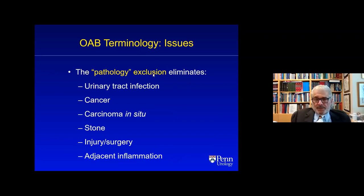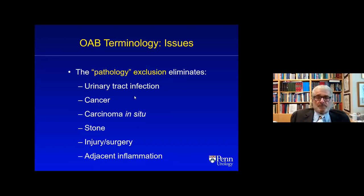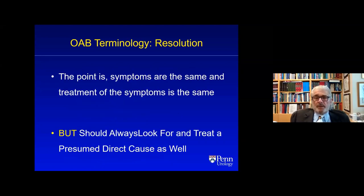The pathology exclusion eliminates OAB symptomatology due to various conditions. OAB is a symptom syndrome — a group of symptoms. To eliminate urgency and frequency and maybe urinary incontinence because of infection, carcinoma in situ, a stone in the distal ureter or bladder, seems too restrictive. The symptoms are the same, and the treatment of OAB symptoms — if you can't cure the condition right away — is the same. You should always look for a presumed direct cause and treat that, obviously.